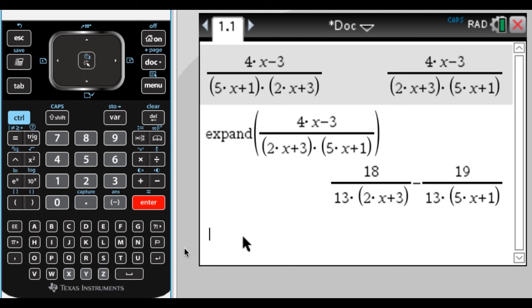The calculator solves for those values, and it gets that the thing above 2x plus 3 should be 18 over 13, and the thing above 5x plus 1 should be negative 19 thirteenths.